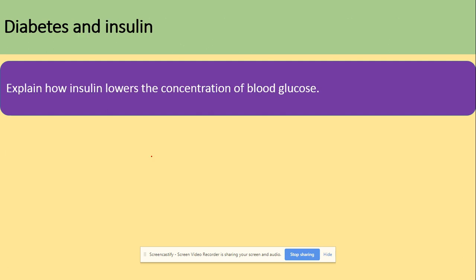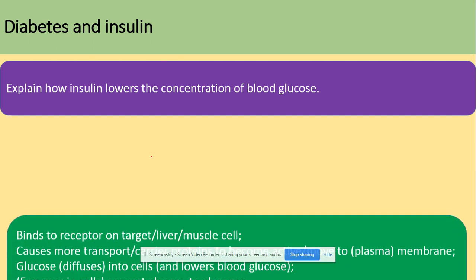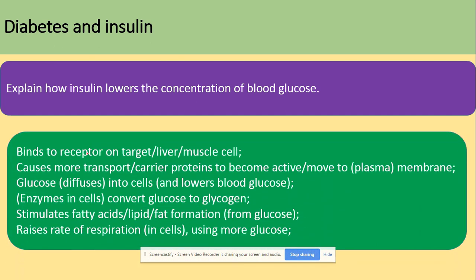Another question asks how insulin lowers blood glucose concentration. Insulin binds to receptors on target cells such as liver cells, causing more carrier transport proteins to become active so glucose can enter the cells from the blood. This lowers blood glucose concentration. Glucose can then be converted into glycogen for storage, stimulate fatty acid or lipid production, or increase the rate of respiration, which uses glucose in glycolysis.